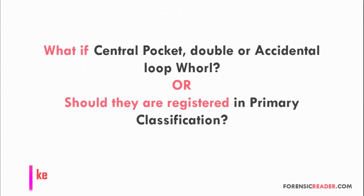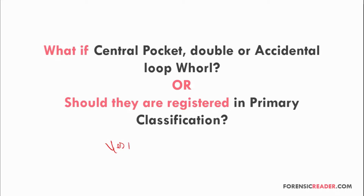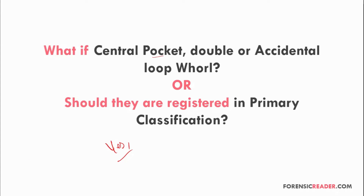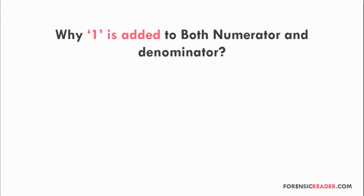Regarding special whorls — central pocket double loop or accidental loop whorls — the short answer is yes, they are registered in primary classification because they are also whorls, unlike other subdivisions of Henry. They use ridge count or ridge trace values, but here only the appearance of the whorl matters. If central pocket double loop or accidental loop whorls appear, they are also considered as a whorl and named accordingly as per their numerical value.